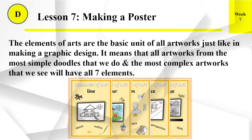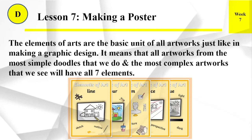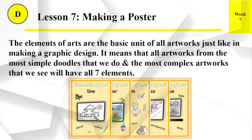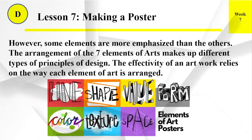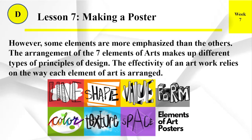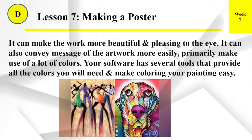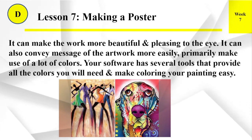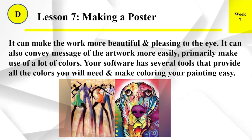The elements of arts are the basic unit of all artworks, just like in making a graphic design. All artworks — from the most simple doodles to the most complex artworks — will have all seven elements. However, some elements are more emphasized than others. The arrangement of the seven elements of arts makes up different types of principles of design. The effectivity of an artwork relies on the way each element of art is arranged. It can make the work more beautiful and pleasing to the eye, and can also convey the message of the artwork more easily. Primarily make use of a lot of colors; your software has several tools that provide all the colors you will need and make coloring your painting easy.